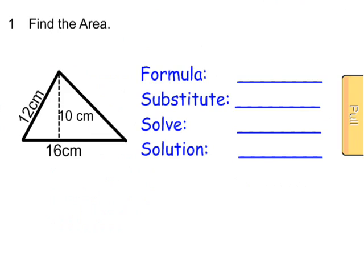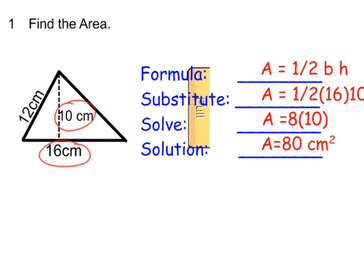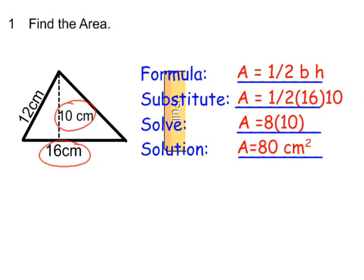Let's try a few examples. I look at my base and my height — both are even numbers here. Since the base is even, I'll use one half of the base times the height. One half of 16 is 8, multiplied times the height of 10. The area of this triangle is 80 square centimeters.